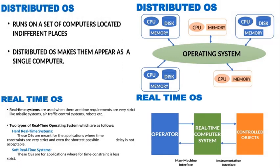Distributed Operating System: used in networking, runs on a set of computers located in different places — as seen in computer labs — and makes them appear as a single computer. Real-Time OS: used when time requirements are very strict, like missile systems, air traffic control systems, and robots. It is further divided into two parts: Hard real-time systems, where application time constraints are very strict and even the shortest delay is not acceptable, and Soft real-time systems, where time constraints are less strict.